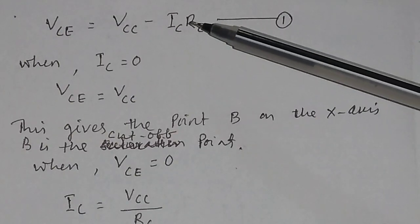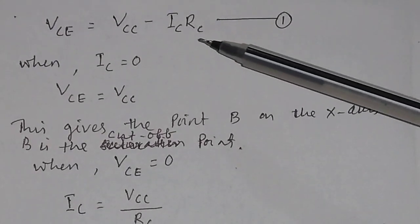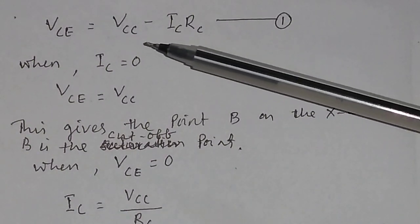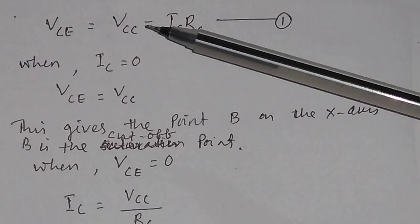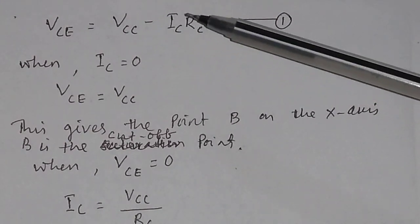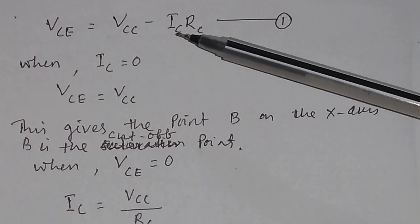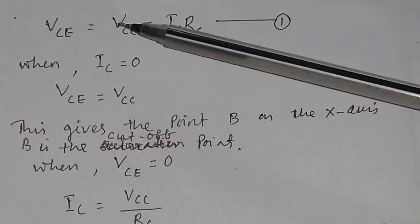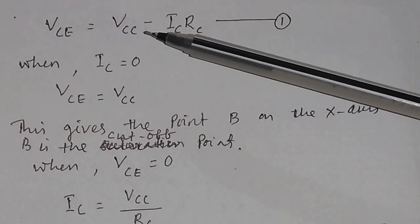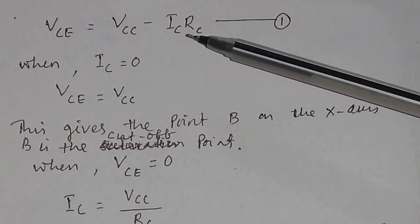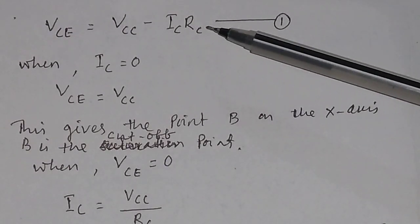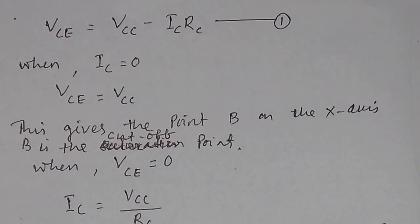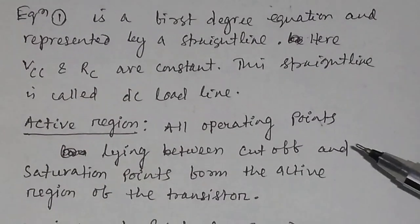Here VCC and RC are constant. The equation will be in the form Y = MX − C, where the slope is negative. VCC — the voltage applied across the output — is constant, and RC, the load resistance, is also constant. This straight line is called your DC load line.